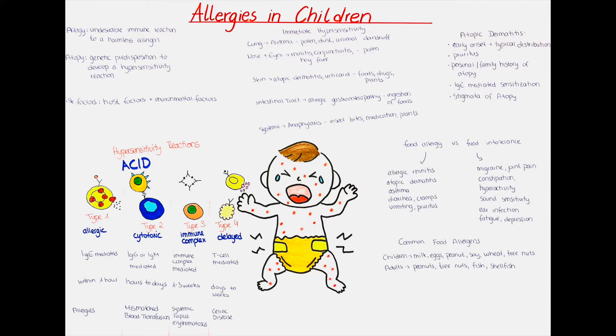The type 2 hypersensitivity reaction is the cytotoxic type. Here an IgG or IgM antibody binds to a cellular antigen which leads to the activation of the complement system and cell lysis. IgG antibodies also mediate the reaction of T cells, natural killer cells, macrophages and neutrophils. This type is usually seen in the lysis of red blood cells after a mismatched blood transfusion, in graft rejections and in Goodpasture syndrome. This reaction occurs in hours to days.